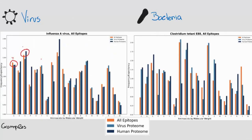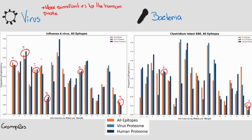Viruses revealed to have in their epitopes more amino acids with similar proportions to the human proteome than bacteria, hinting that viruses have evolved to be more similar to their host, probably to favor their infection and defense mechanism.